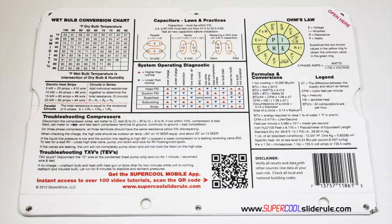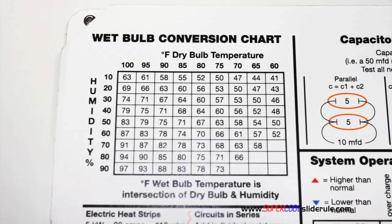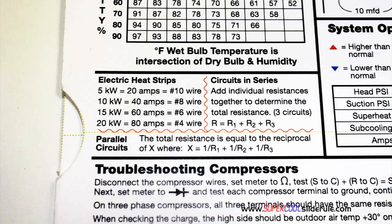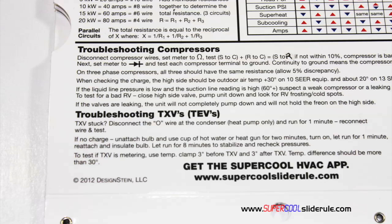The back cover contains required formulas. It has capacitor rules and practices, a wet bulb conversion chart, how to perform computations on series or parallel circuits, an electric heat strip guide, a complete system troubleshooting diagnostic chart, and how to troubleshoot compressors and TXV.